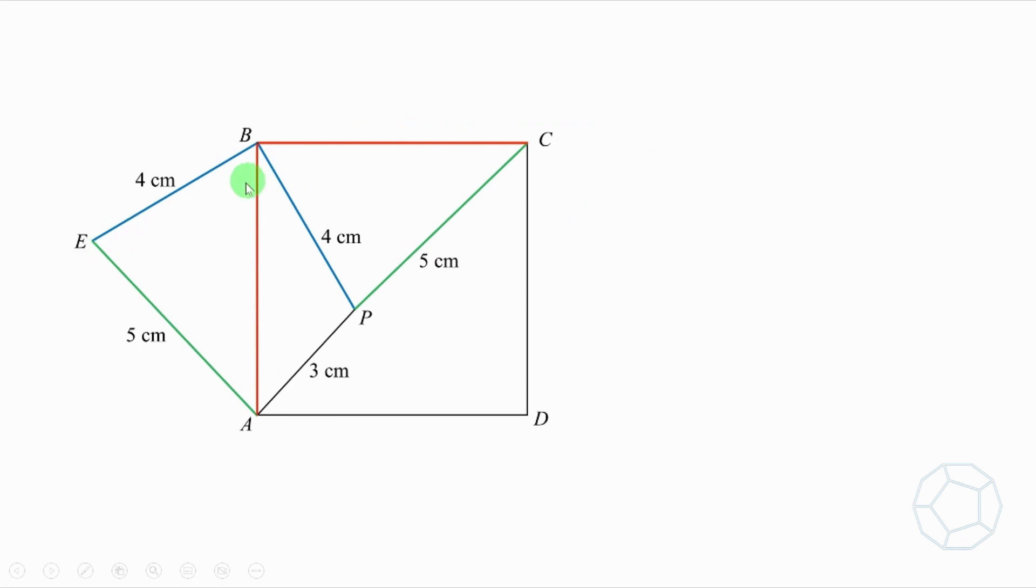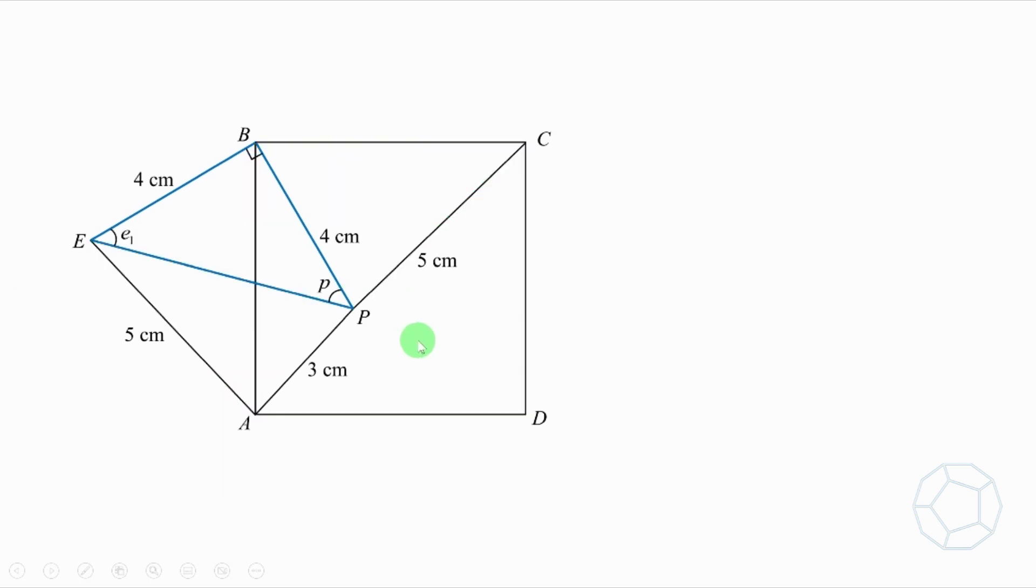Label the three angles at point B as B1, B2, and B3. We can prove that angle EBP is 90 degrees. Next, let's look at the blue triangle EBP, which is right angle and isosceles. Then we can find the angle E1 and the length of the hypotenuse EP.